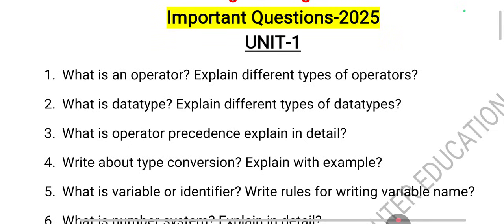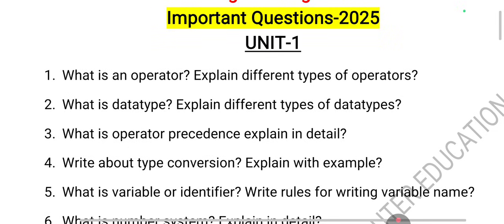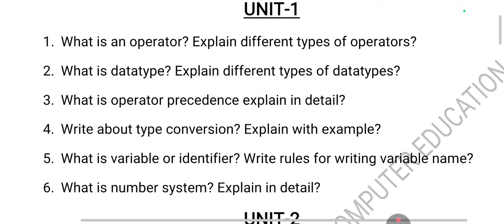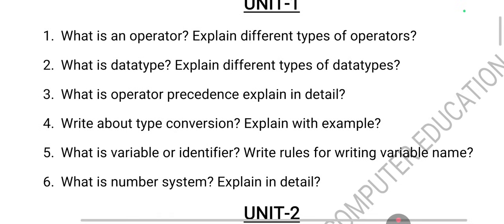A variable is used to store a value and is also called an identifier. The rules for variable naming are: the name should start with an alphabet, it should not start with a special symbol, no keyword can be used as a variable name, and the maximum length of a variable name is 32 characters.